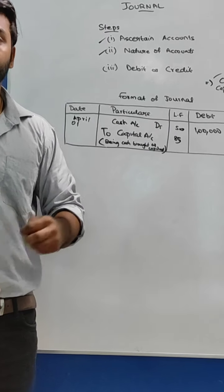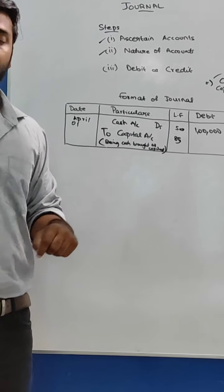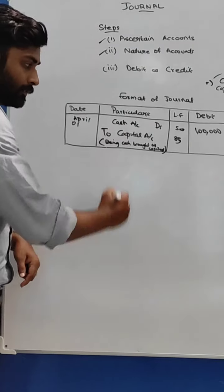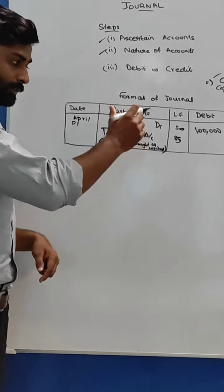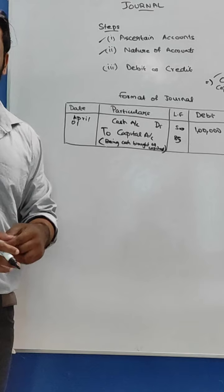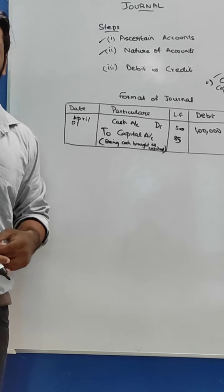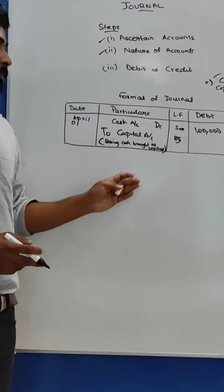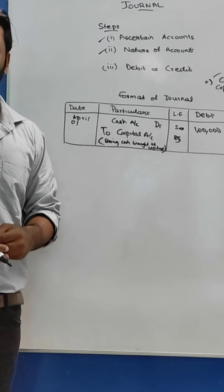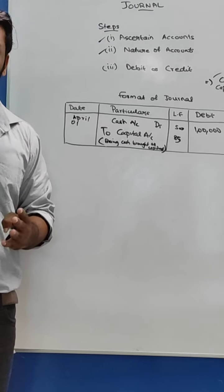So the complete journal entry is: Cash Account debit 1 lakh, To Capital Account 1 lakh. This is the format of the journal, and we will prepare it continuously for the remaining transactions.